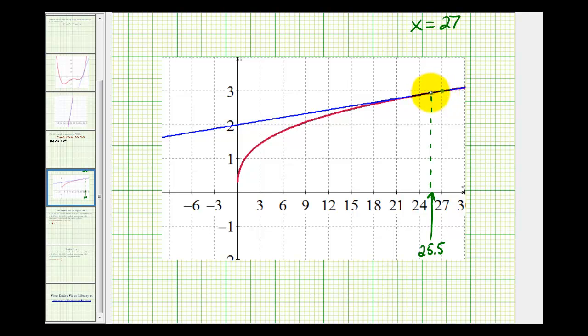But since we're using x equals 27, we're going to have to let delta x, or differential dx, representing the change in x, be negative 1.5. The reason we're using negative 1.5 is because 27 plus negative 1.5 will give us an x value of 25.5.